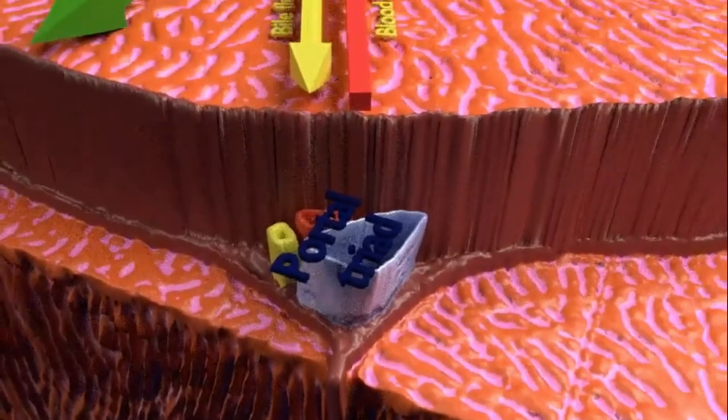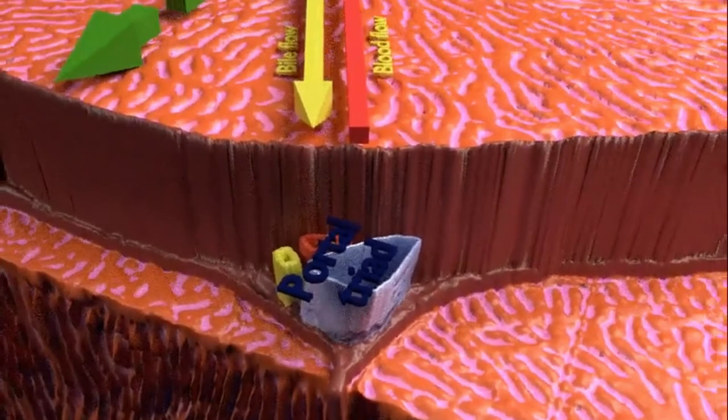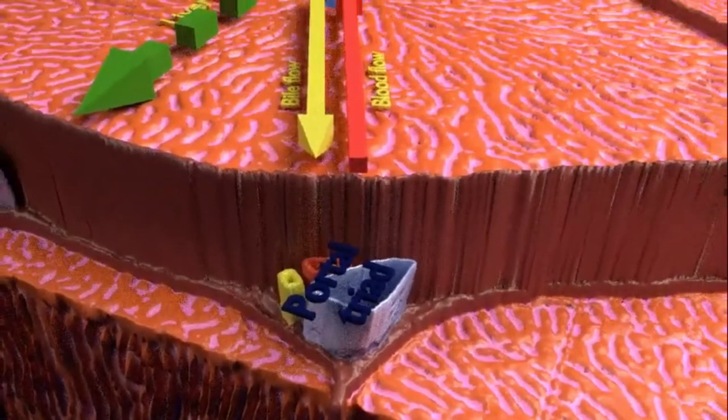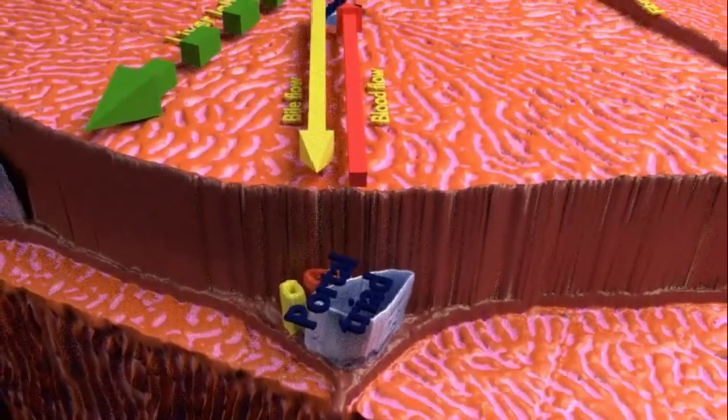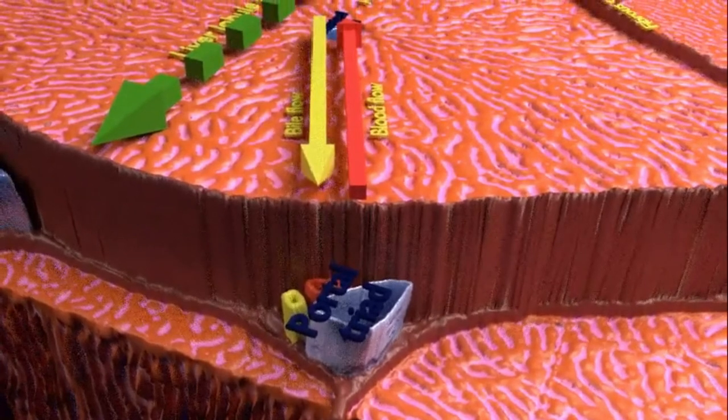The flow of blood across the lobule is opposite in direction to the flow of bile. The oxygenated blood from the hepatic artery and the deoxygenated blood from the portal vein flow towards the central vein.